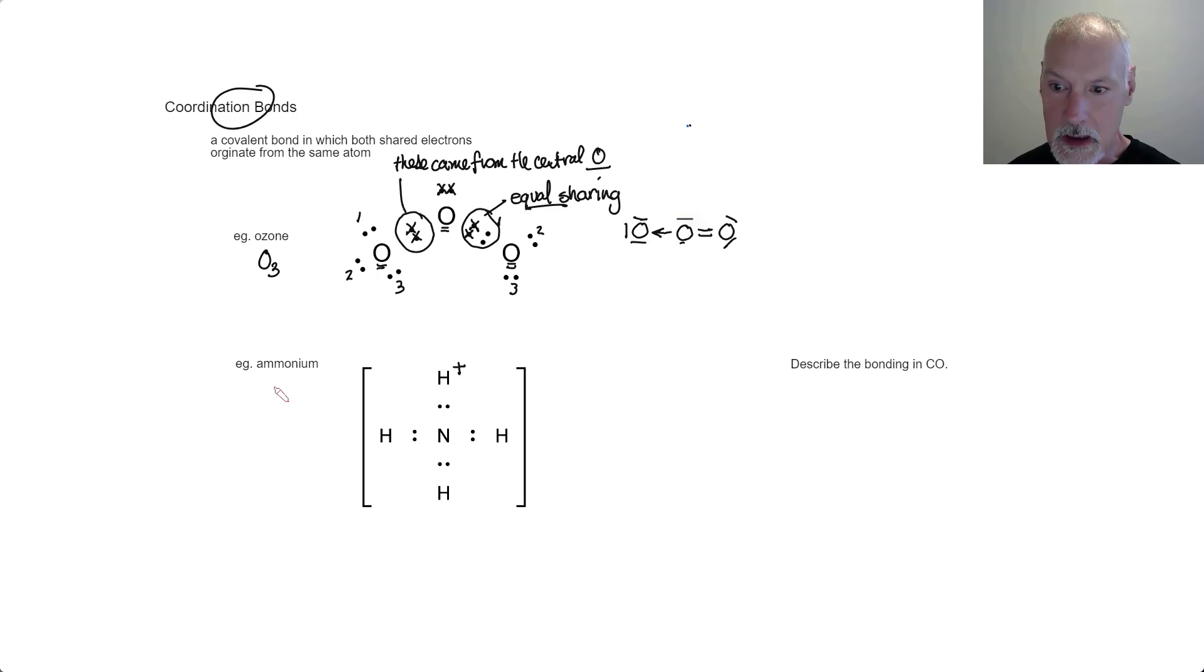Let's take a look at the ammonium ion. Ammonium is NH4 plus. I'm showing this particular hydrogen at the top with a positive charge. That means that it has lost an electron if it possesses a positive charge.